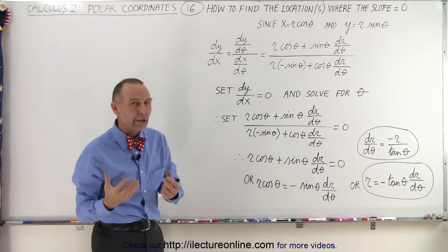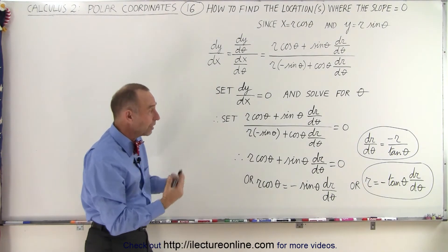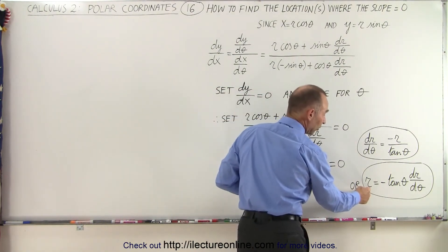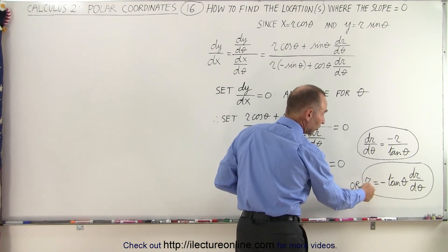How do you do that? Well, now you take your original function that you were given and replace r by that original function in terms of theta so that this r disappears.